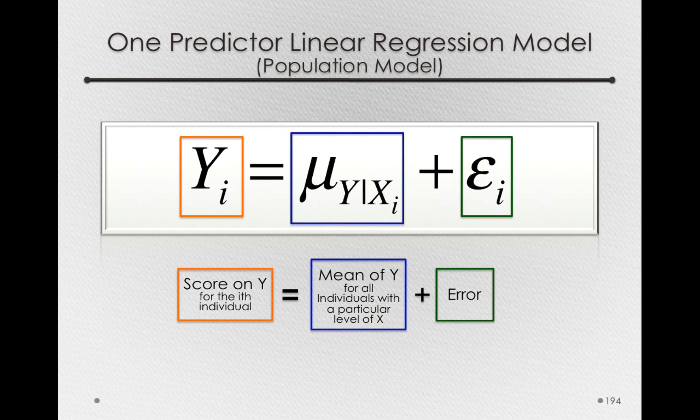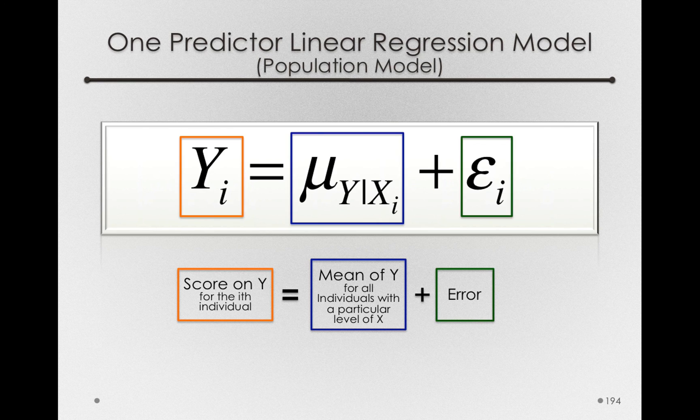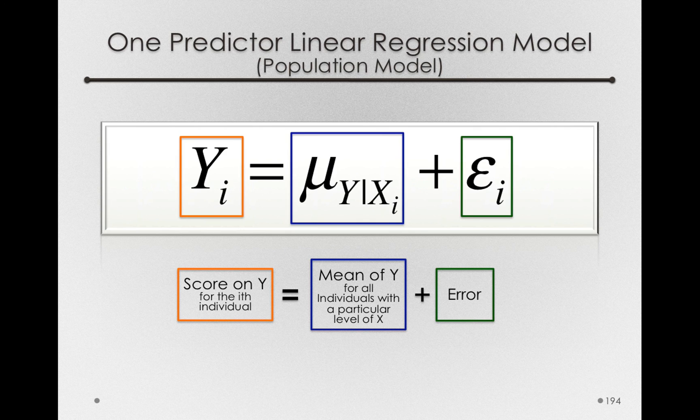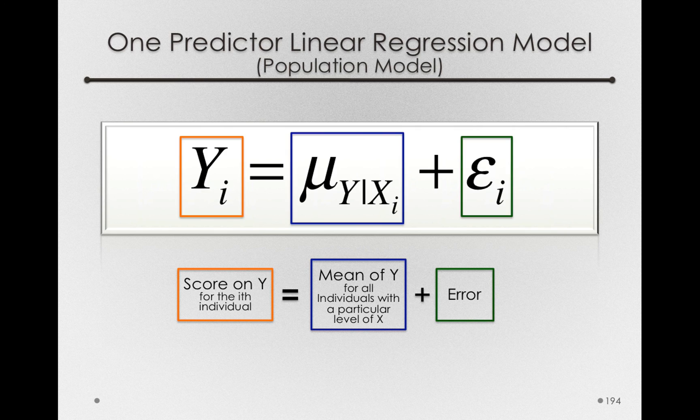Before, it was a group mean for a particular condition or for a particular treatment. Now, it's a group mean for a particular group of people at a particular amount of x. And so what we're really doing with our one predictor model is saying that the score on y for an individual is the average of what everybody gets with the amount of x they have, plus however much they differ from the group mean of all people who have as much of x as they have.